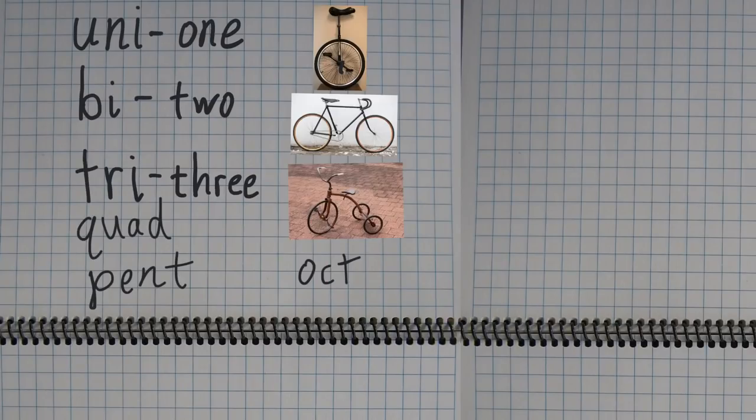And hopefully you've figured out quad is going to be four, pent means five, and oct means eight.